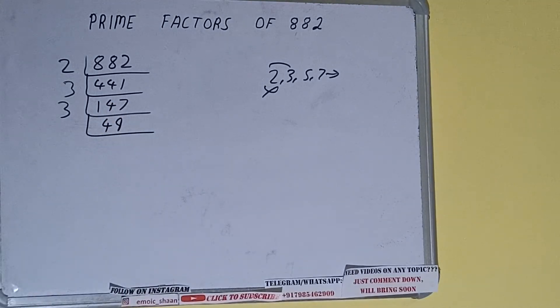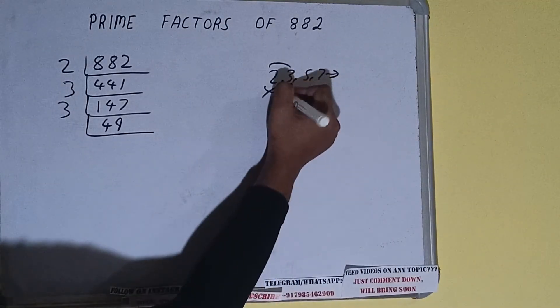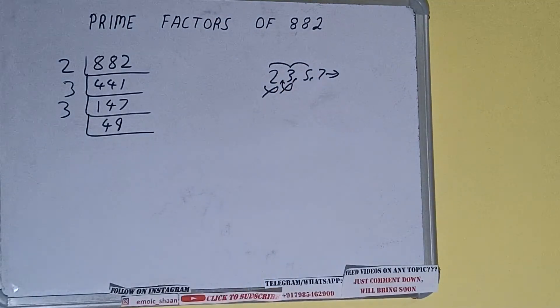Now 49 is further not divisible by 3. So let's check with the next lowest prime number, that is 5. The last digit is neither 5 nor 0, so it is not divisible by 5 also. So let's check with 7.